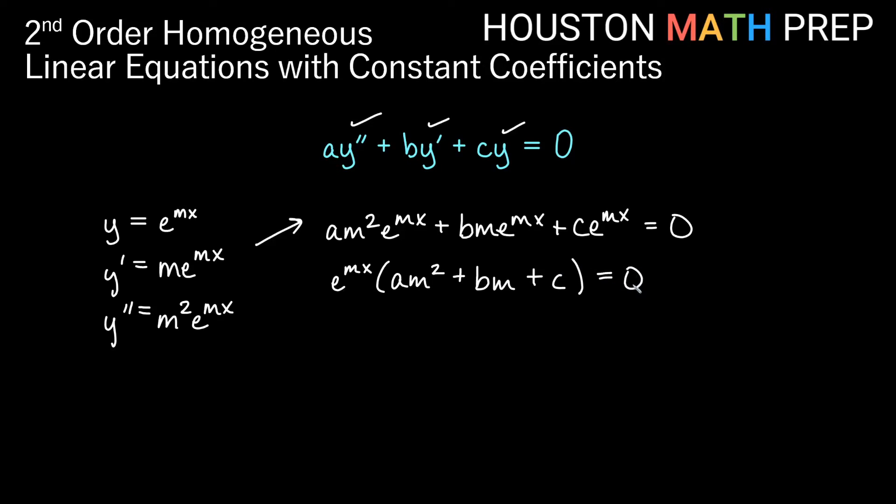So product property for zero says, how do I multiply two things and get zero? Well, one of these two things, or both of them, could be zero and that would give me an answer. The thing is e to the mx is not something that can ever be zero. So this is never zero. So the only way for this to be zero is if this expression equals zero. So this says we would get e to the mx being an answer if am squared plus bm plus c is equal to zero.